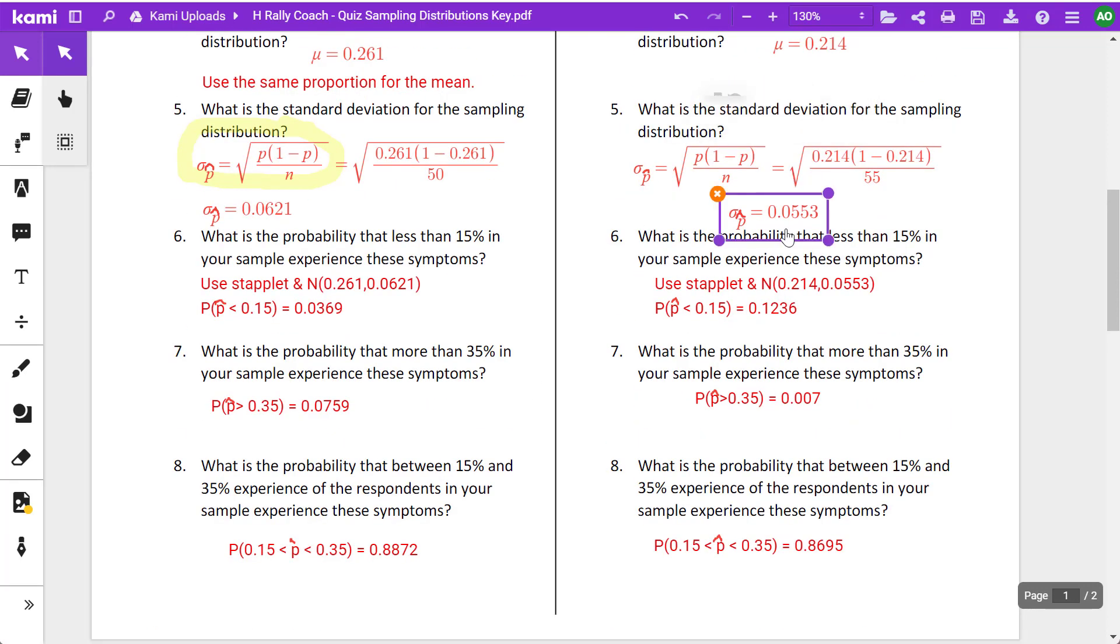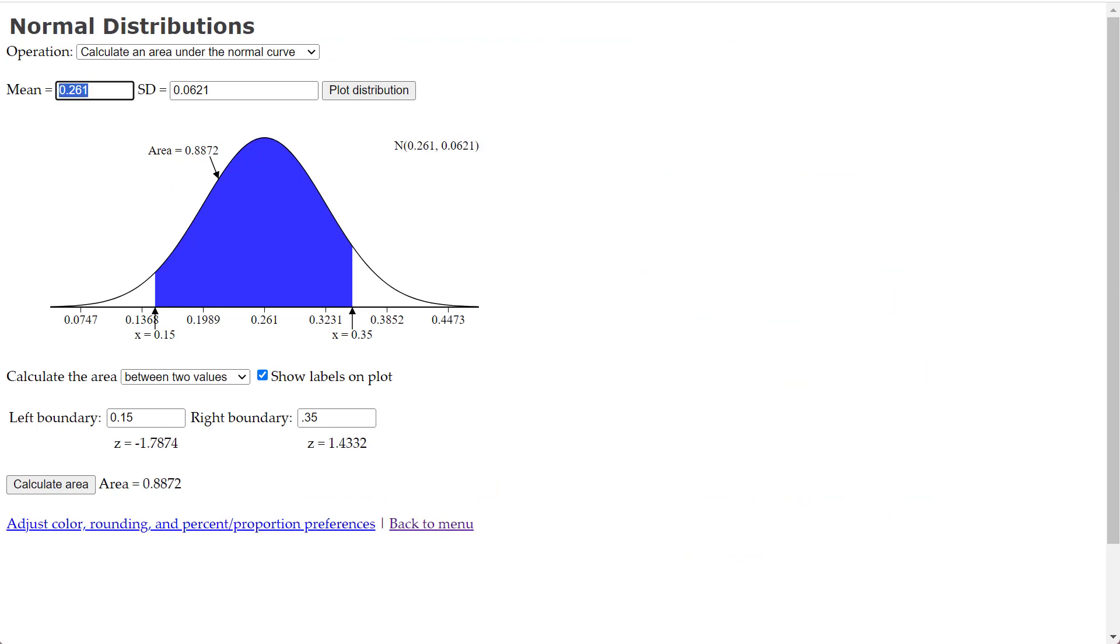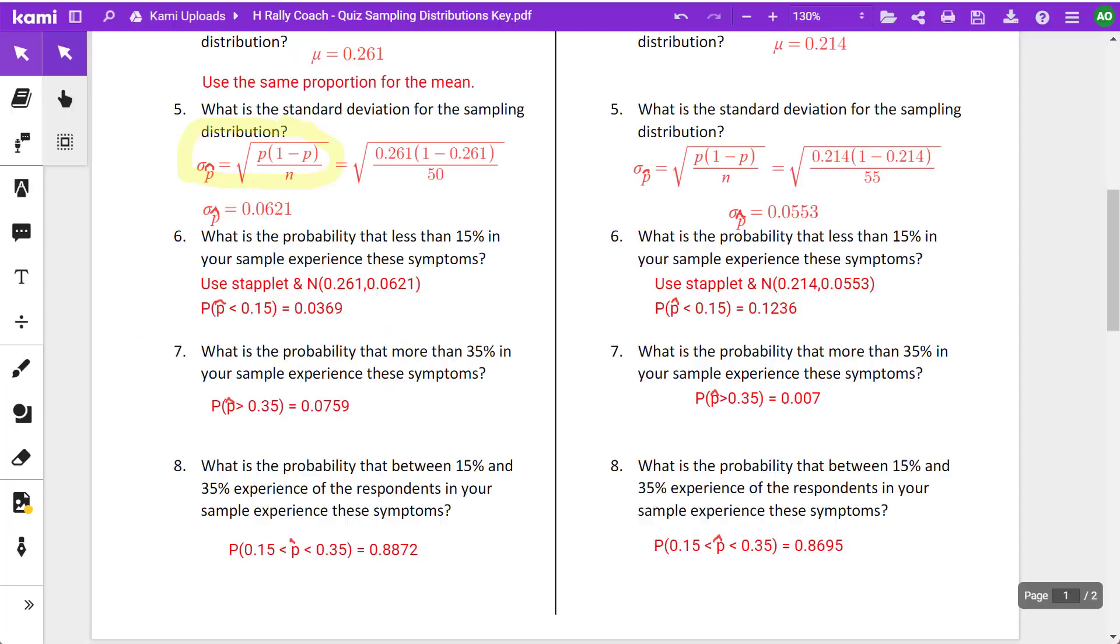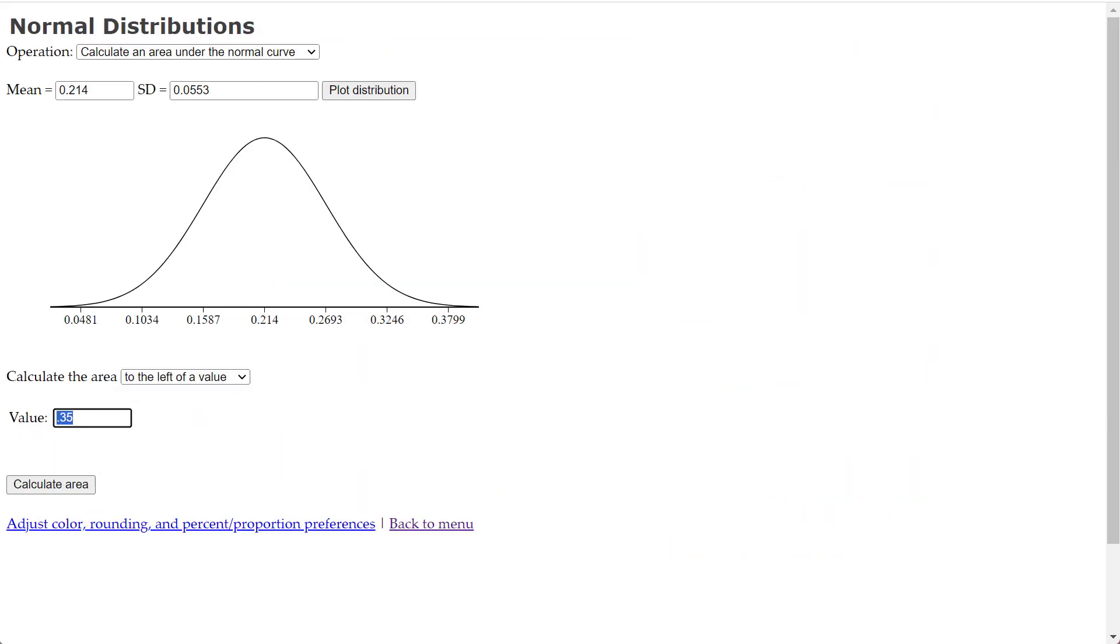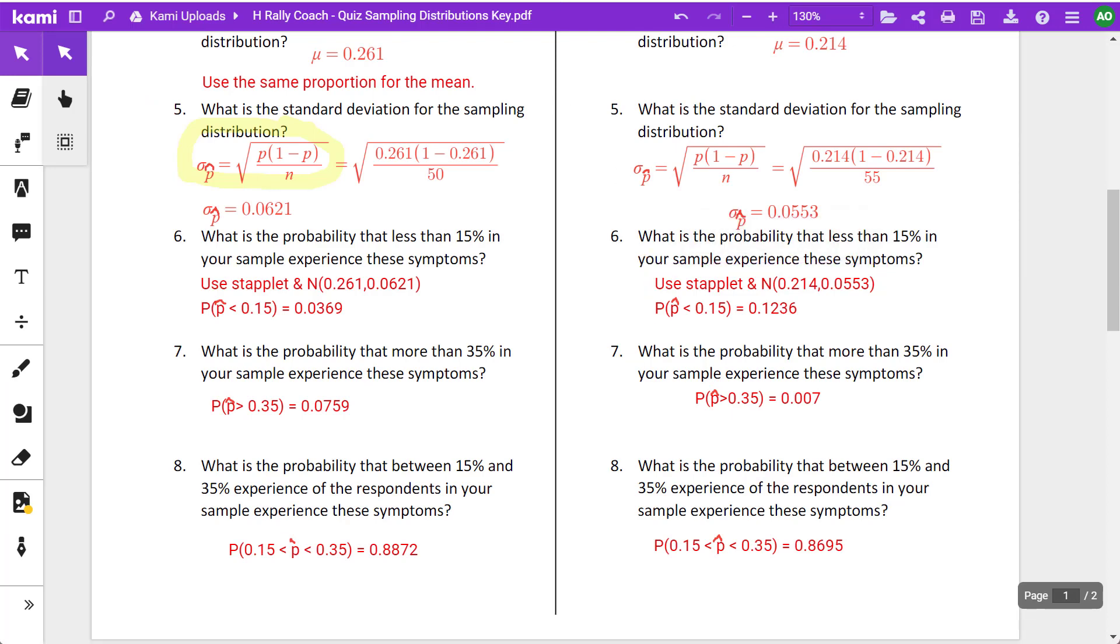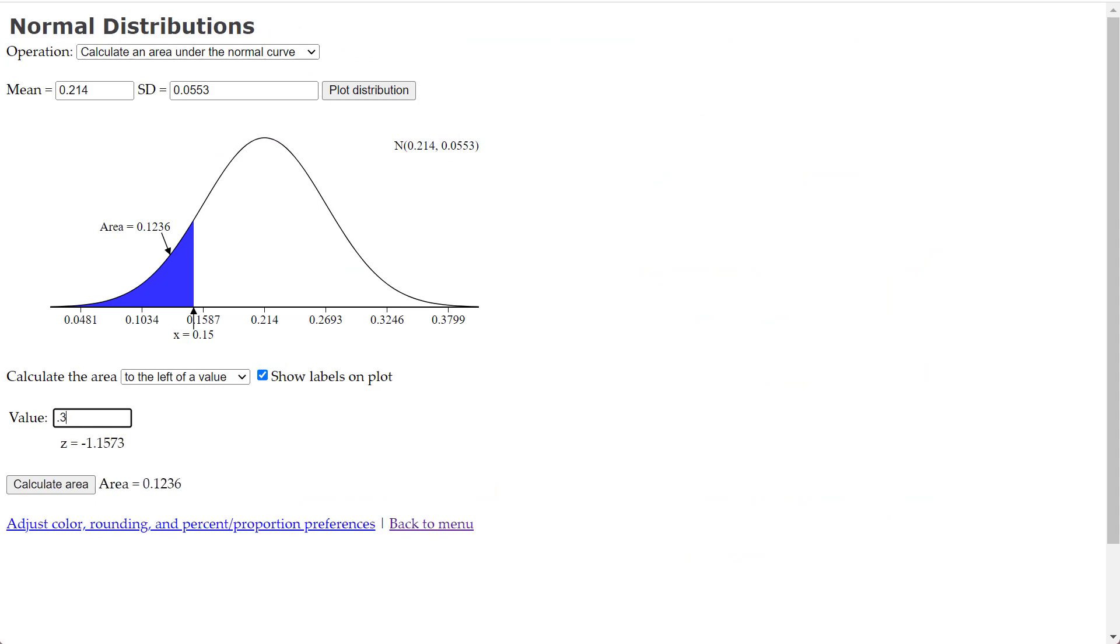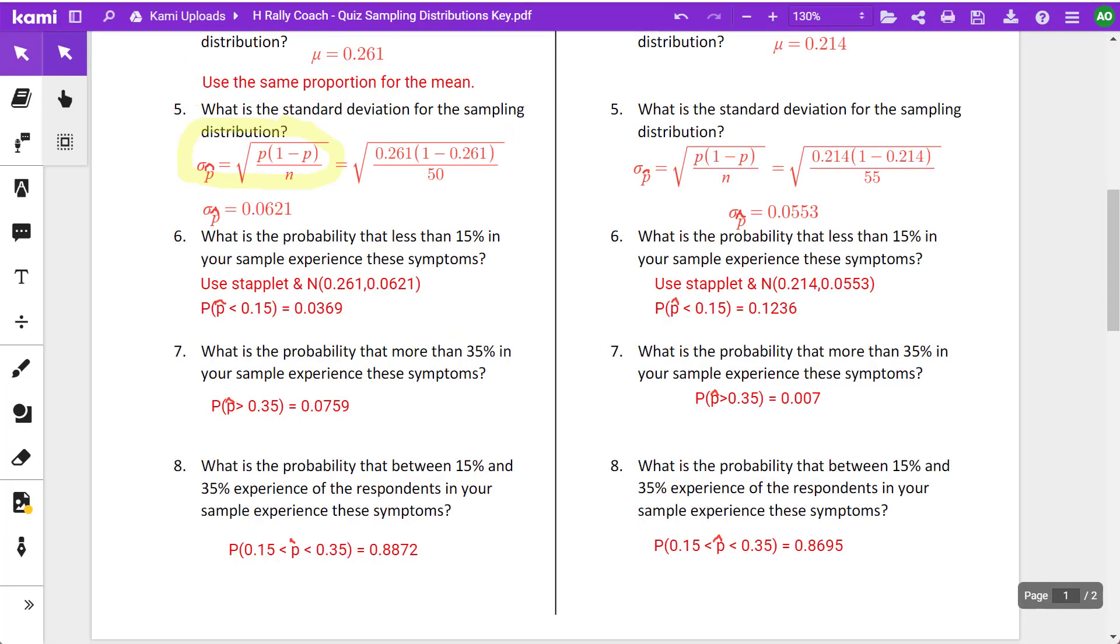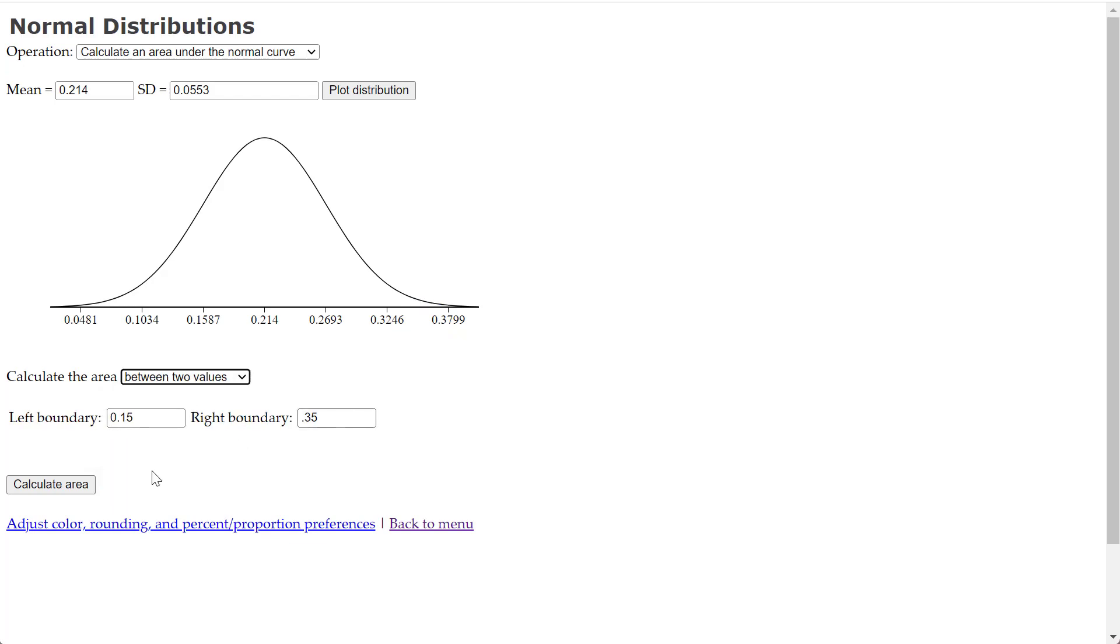Now I'm going to go to this side. Now we have our standard deviation. We have our means. So we have that model. So I got to do 0.214 and 0.0553 and plot my distribution. And the first question asks, what is the probability of the proportion on my samples less than 0.15? So pretty much the same numbers that we were dealing with in the previous problem. So we are going to get 0.165. And then between the two values, 0.15 to 0.35 and I get 0.8695.